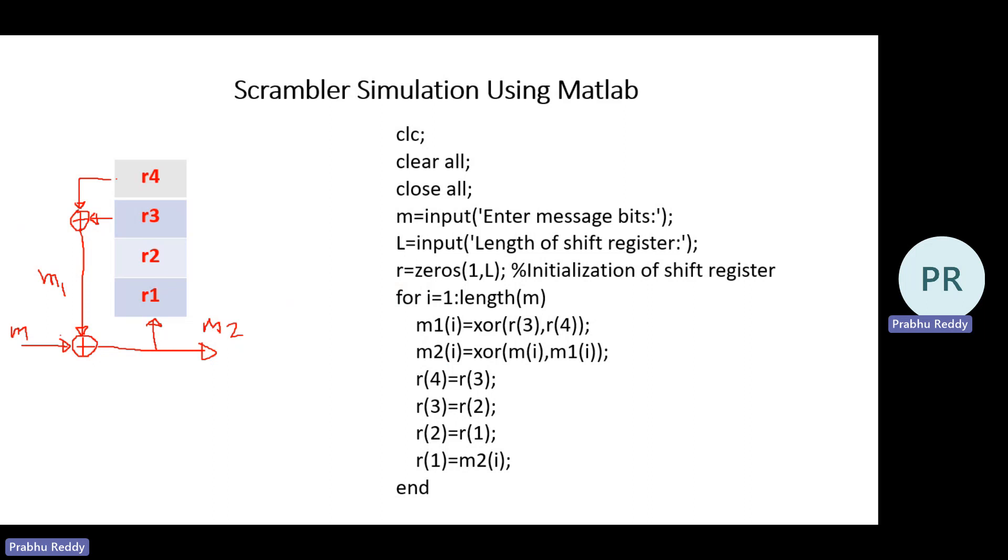When people are doing a bit synchronization concept, there was one problem associated with bit synchronization that whenever there are continuous occurrences of zeros and ones, it will be very difficult for a bit synchronization to happen between transmitter and receiver. At that time, to randomize the continuous occurrences of zeros and ones, a concept called scrambling was introduced.